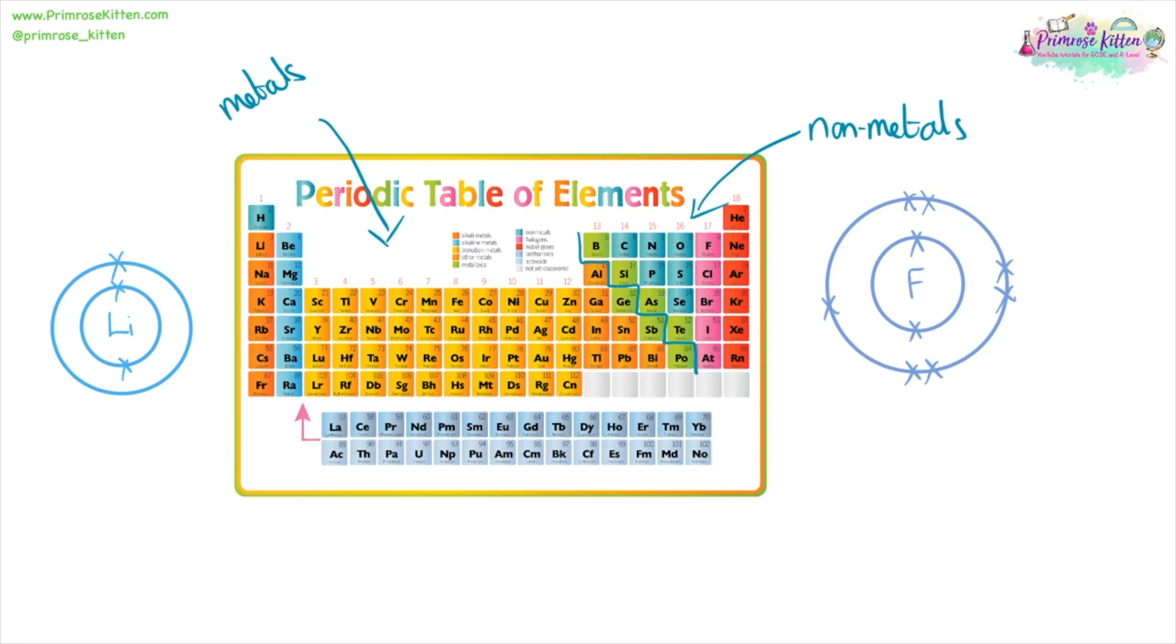Metals are going to lose electrons. And when we lose electrons, we get positive charges. Non-metals are going to be gaining electrons. And when we gain electrons, we get negative charges. Things in group one are going to lose one electron, so are going to be plus one ions. Things in group two are going to lose two electrons, so are going to be plus two ions. Things in group six are going to gain two electrons, so are going to be minus two ions. And things in group seven are going to gain one electron, so are going to be minus one ions.